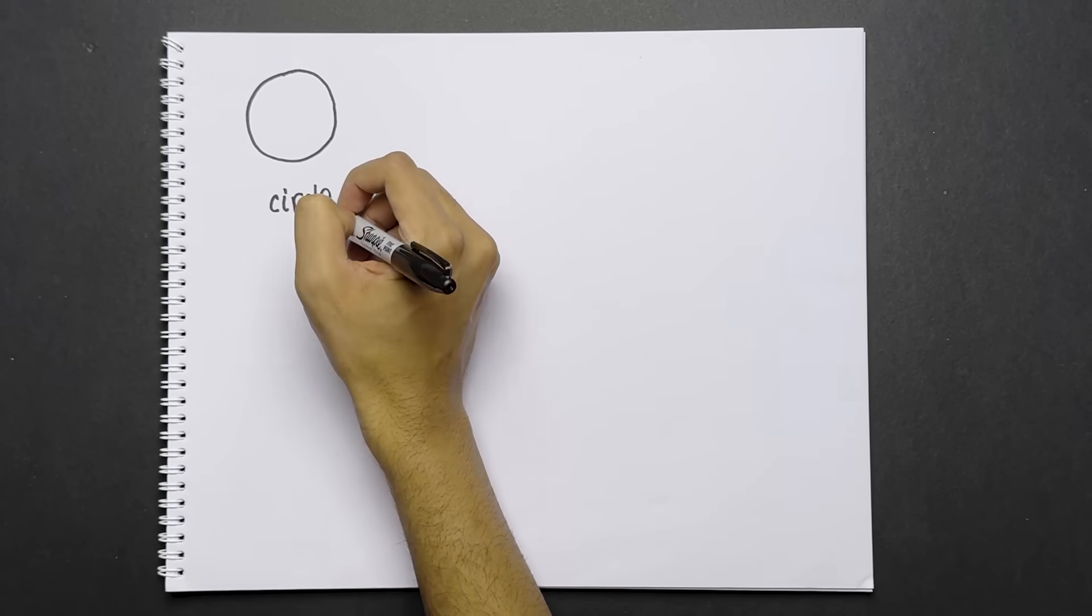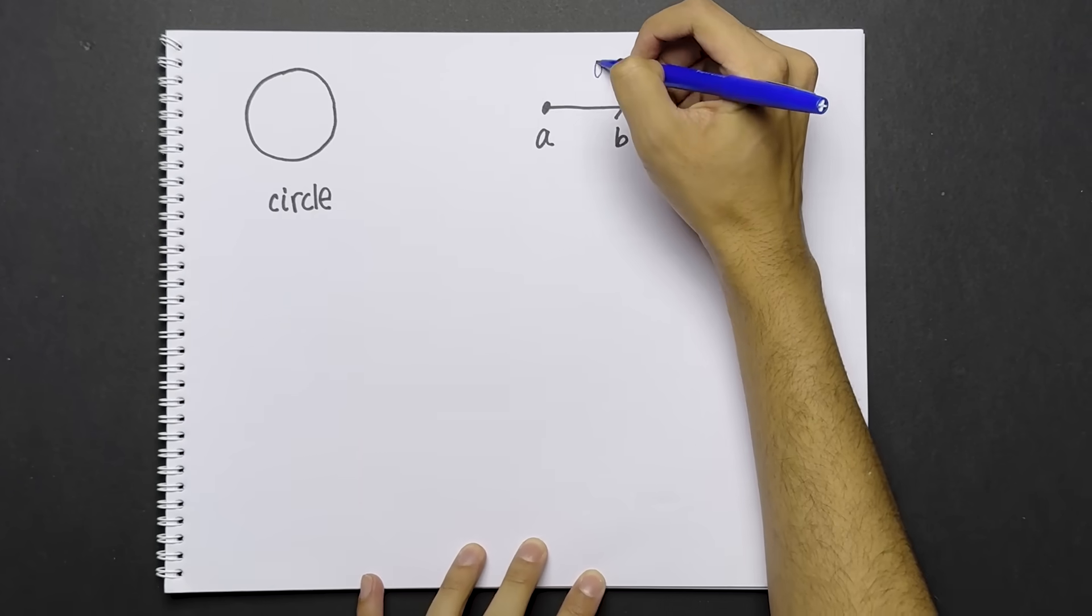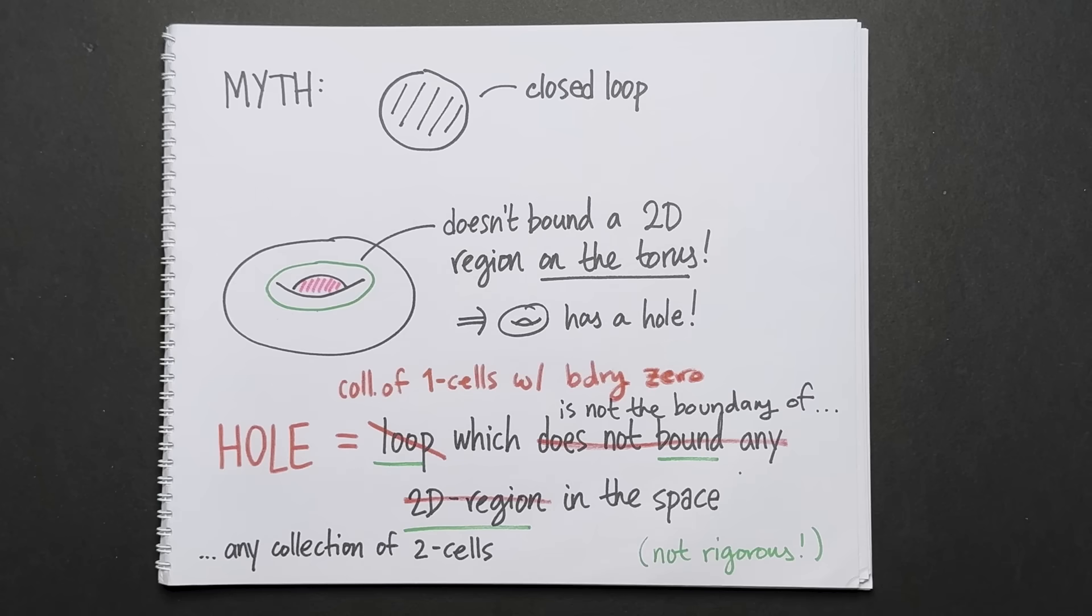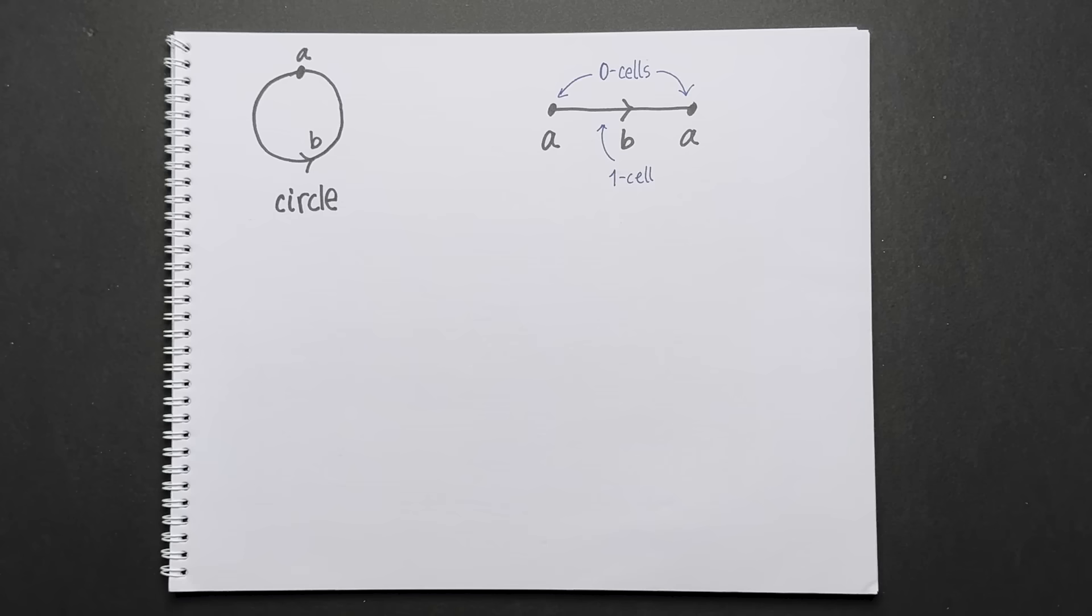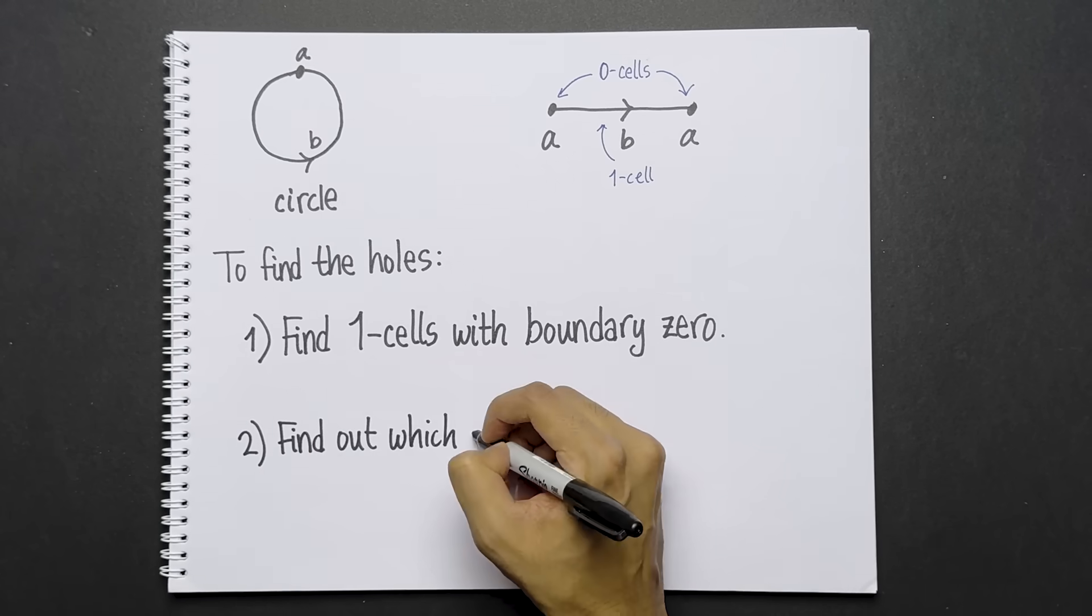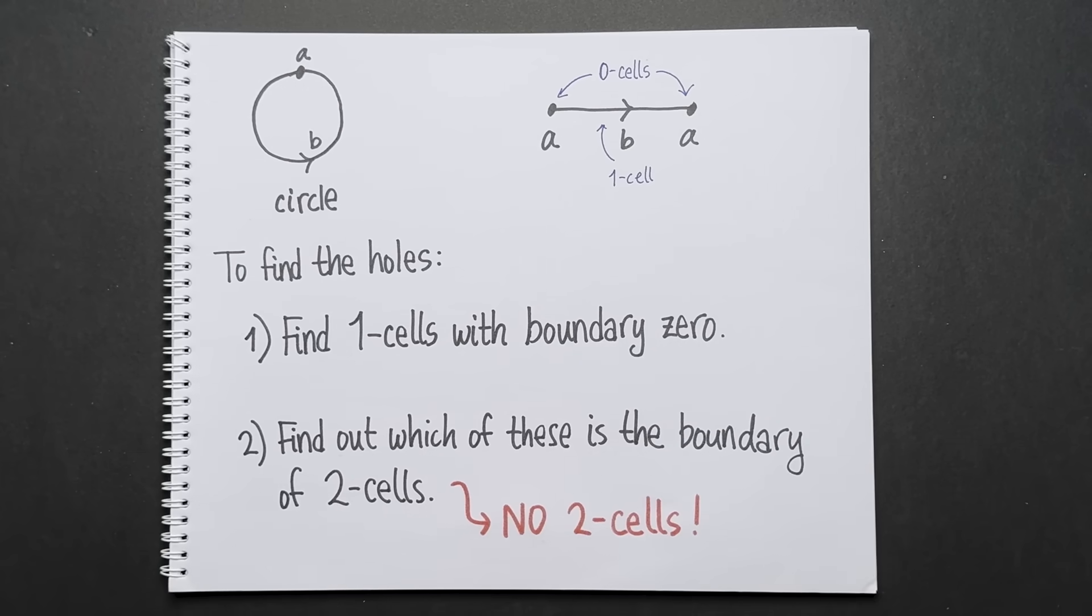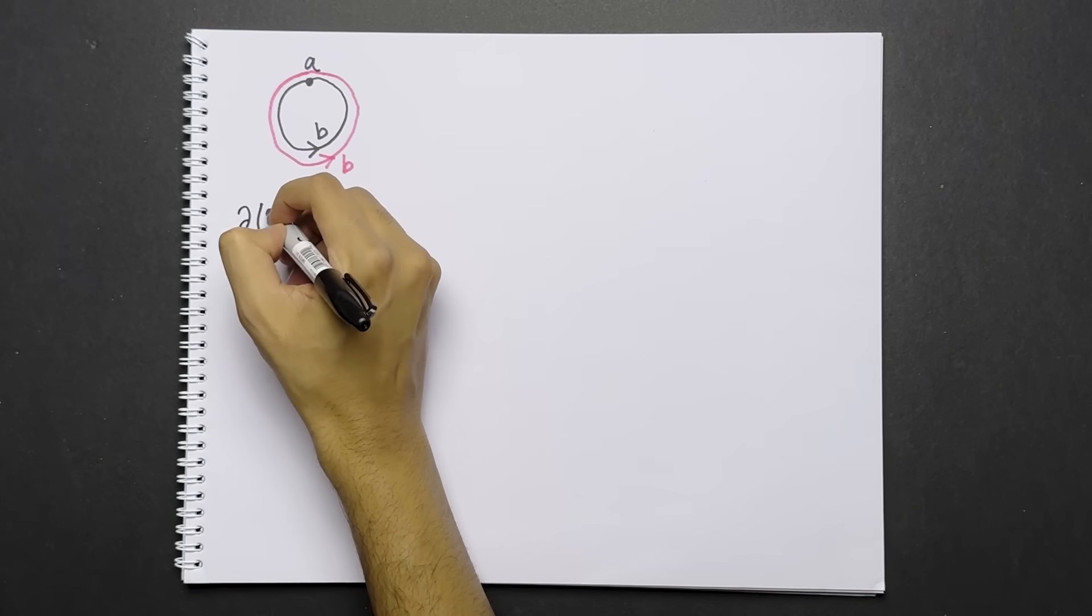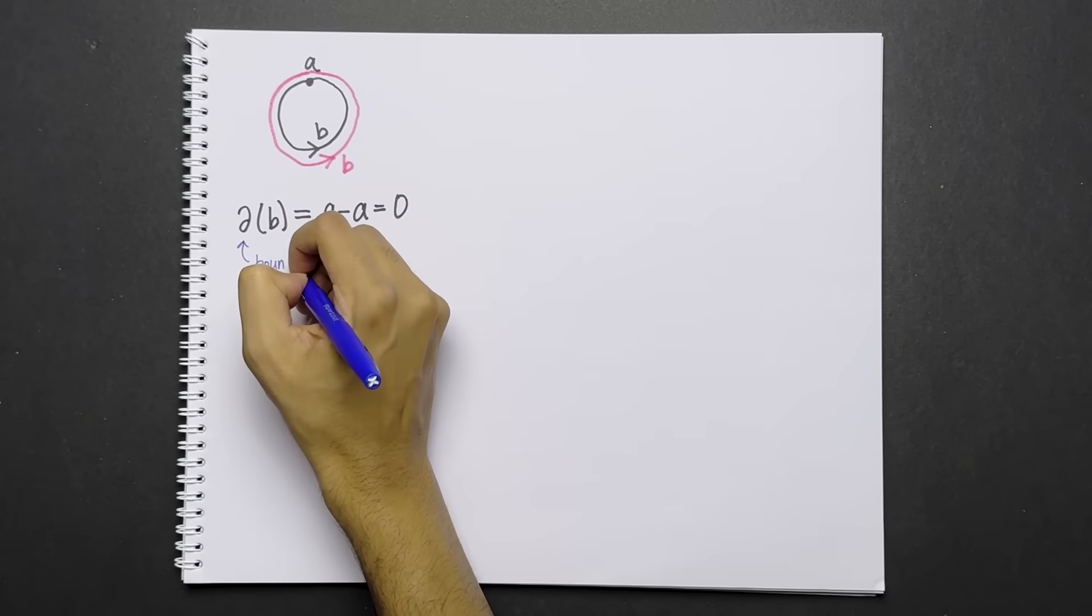Let's start with the simplest example, the circle. The first step is to represent the circle using cells, as follows. If we take a one cell, let's call it b, and identify both endpoints with a single zero cell, a. If we imagine gluing the ends together, we get a circle. A hole is a collection of one cells with boundary zero, which is not the boundary of any two cells. So this computation consists of two steps. One, find all the two cells with boundary zero. And two, figure out which of these is the boundary of two cells. Let's start with step two, because it's the easiest. This diagram has no two cells, so none of the one cells can be boundaries of two cells. For step one, let's start by calculating the boundary of the one cell b. It's the start point minus the end point, a minus a, which is zero. So b has boundary zero. By the way, this del is the notation that's used for boundary.